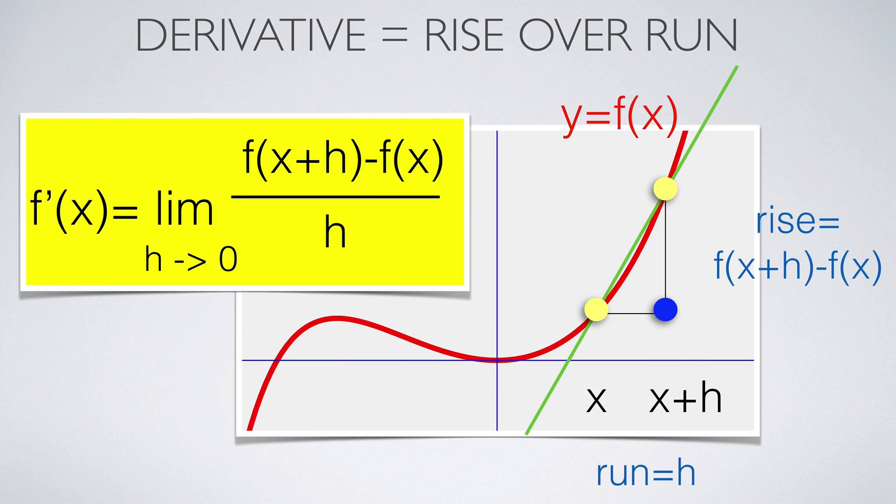The derivative of a function at a point x is defined as a limit. It is the rate of change of the function and geometrically given as a slope. You can approximate the derivative by making a small step h, then look at the rise f(x+h) - f(x) and divide it by the run, which is h. If the derivative exists at a point, the function is called differentiable.